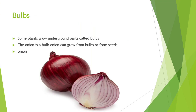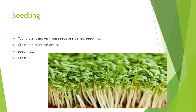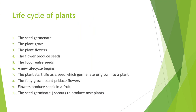Bulbs — not like a lightbulb — are underground plant parts. The onion is called a bulb. The onion grows from bulbs and also from seed onions. Seedlings are young plants grown from seeds — cress and mustard are examples of seedlings, grown from the ground.